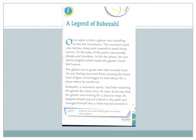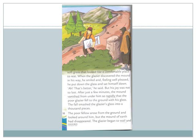Rubazel, a mountain sprite, had been watching the glazier for some time. As soon as he saw that the glazier was looking for a place to stop, he skipped ahead around a bend in the path and changed himself into a little mound covered in soft grass that looked like a comfortable place to rest. When the glazier discovered the mound, he smiled and feeling well pleased, he put down the glass and sat himself down. 'Ah, that's better,' he said. But his joy was not to last. After just a few minutes, the mound vanished from under him so rapidly that the poor glazier fell to the ground with his glass. The fall smashed the glazier's glass into a thousand pieces.